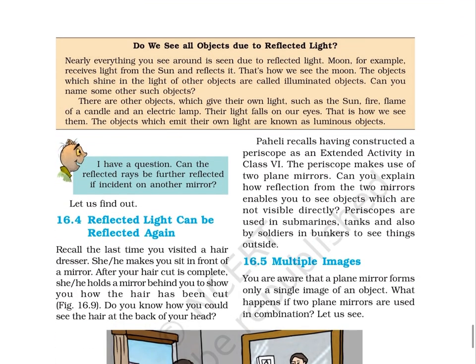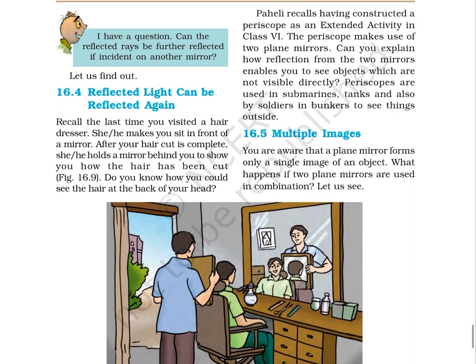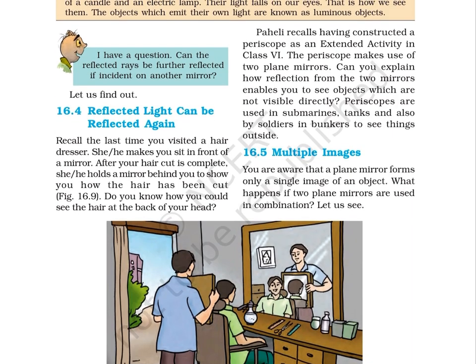Do we see all objects due to reflected light? Nearly everything you see around is seen due to reflected light. The moon, for example, receives light from the sun and reflects it — that's how we see the moon. Objects which shine in the light of other objects are called illuminated objects. There are other objects which give their own light, such as the sun, fire, flame of a candle, and an electric lamp — their light falls on our eyes, and that is how we see them. The objects which emit their own light are known as luminous objects.